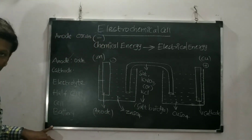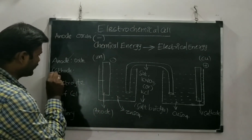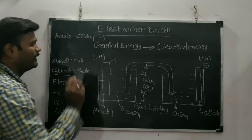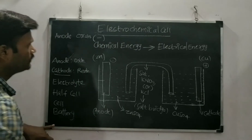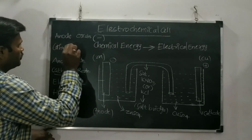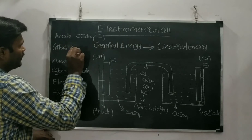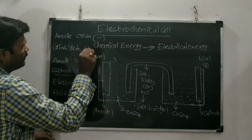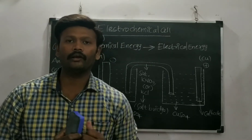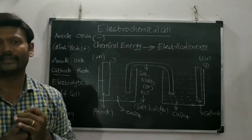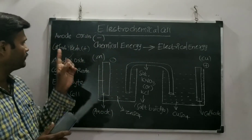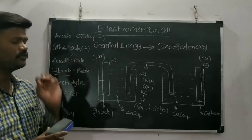The next one is the cathode. At the cathode, a reduction reaction takes place. That means there will be acceptance or gain of electrons at the cathodic region. So cathode: reduction reaction takes place.